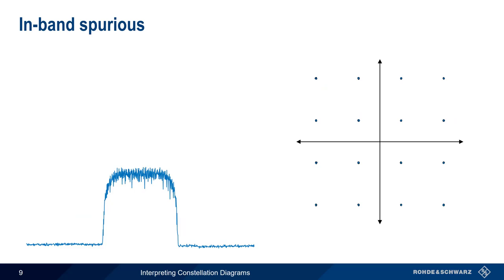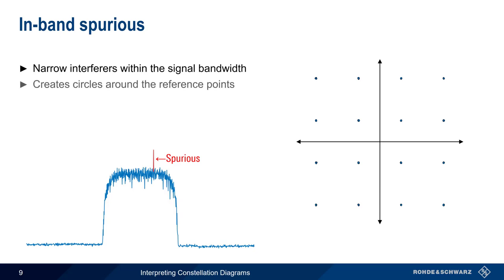Let's compare this to what happens when the noise is not wideband. Inband spurious refers to narrowband interferers, or spurs, that fall within the bandwidth of the modulated signal. These spurs often create circles around the constellation reference points, and the radius of these circles depends on the level or amplitude of the spurious signal.